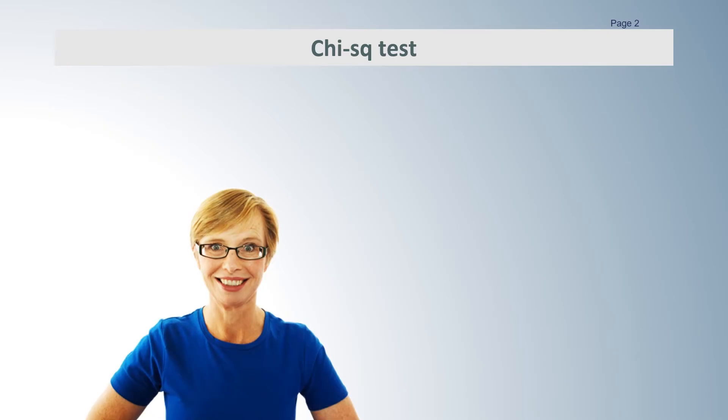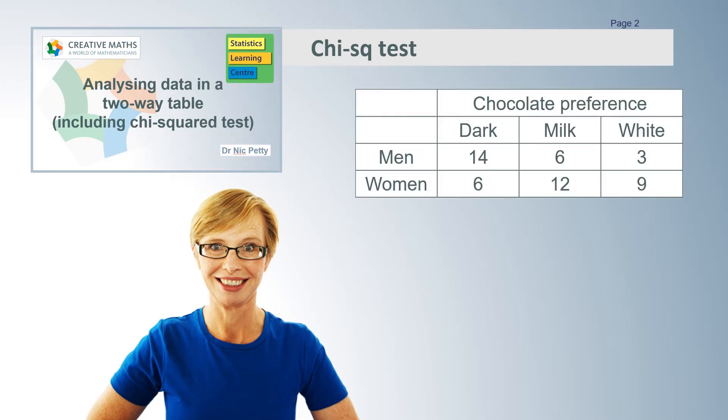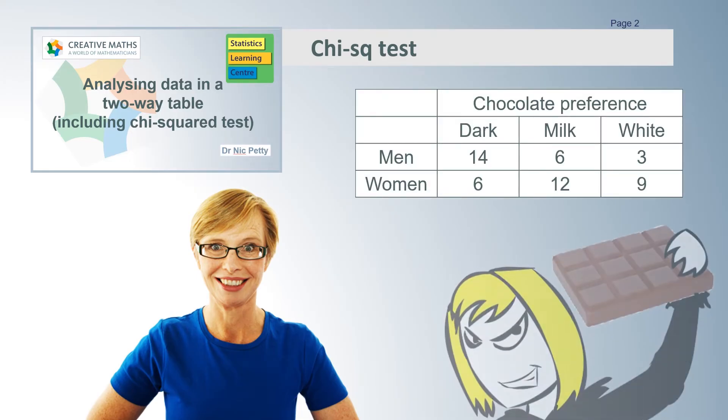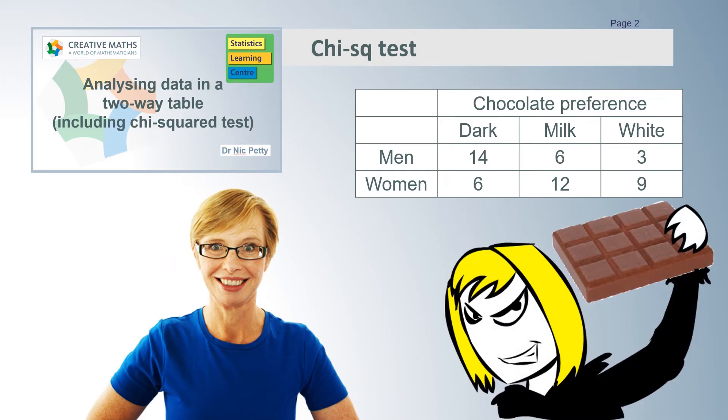Hi, I'm Dr Nick from Creative Maths Including Statistics Learning Centre. This video builds on our video Analyzing Data in a Two-Way Table Including Chi-Squared Test. In that video we introduced the problem with Helen and her chocolate market research.